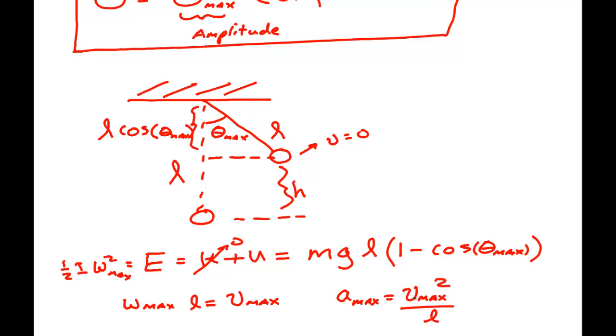And that centripetal acceleration is V squared over R, which is L. So we know that a max is equal to V max squared over L. We can find all of those things from here and get formulas. I don't know any of those formulas off my head. I solve them when I need them.